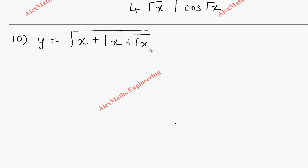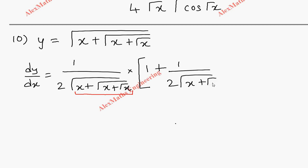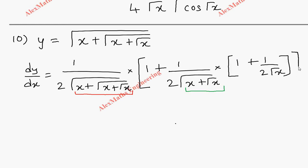Next: y = √(x + √(x + √x)). For dy/dx, first differentiate the outermost square root: 1/(2√(·)) with the inner function written as it is. Then multiply by the differentiation of the inner function: derivative of x is 1 plus the derivative of √(x + √x), which is 1/(2√(x+√x)) times (1 + 1/(2√x)).